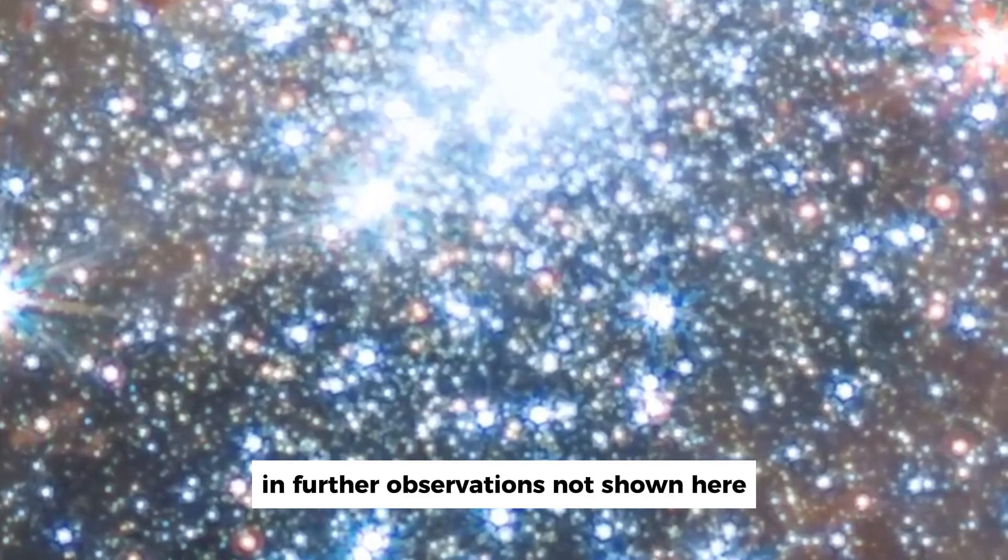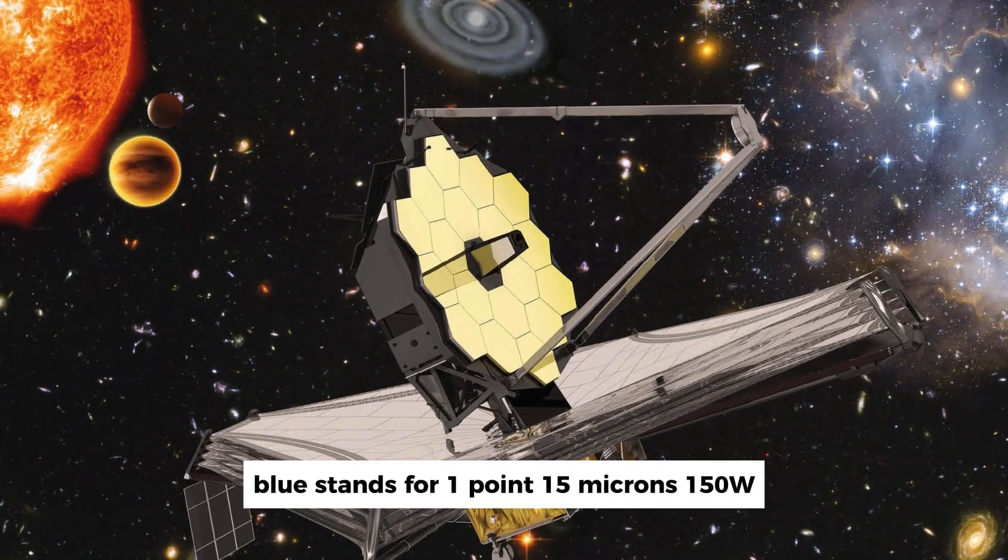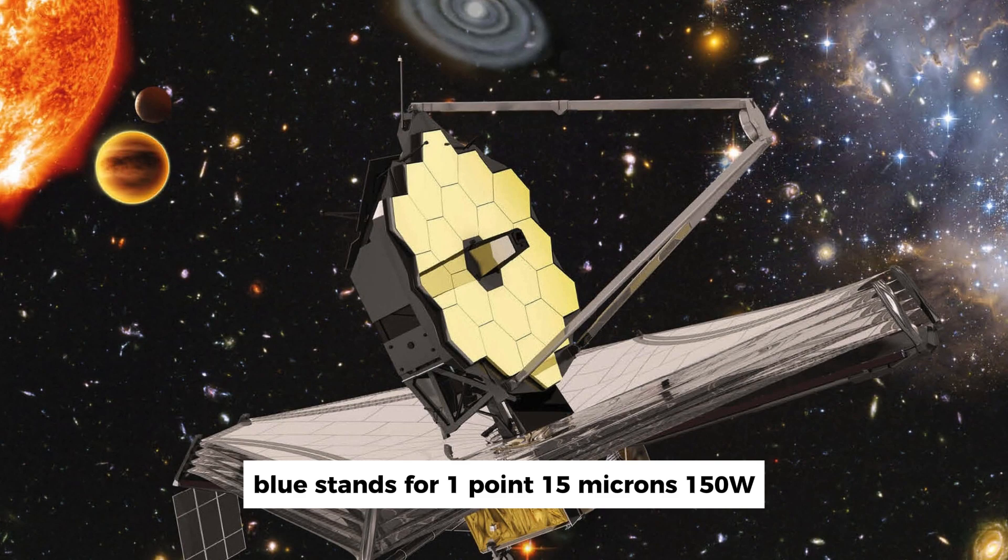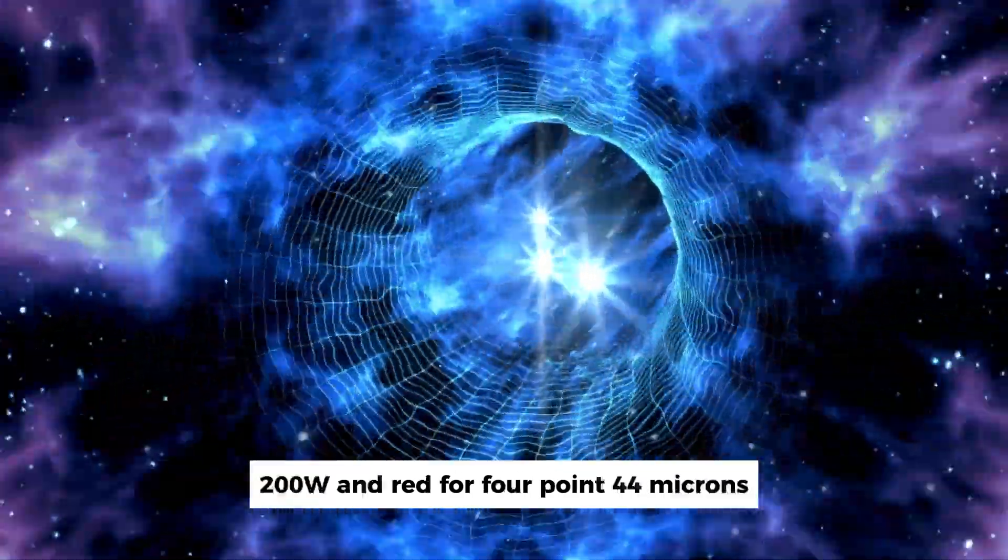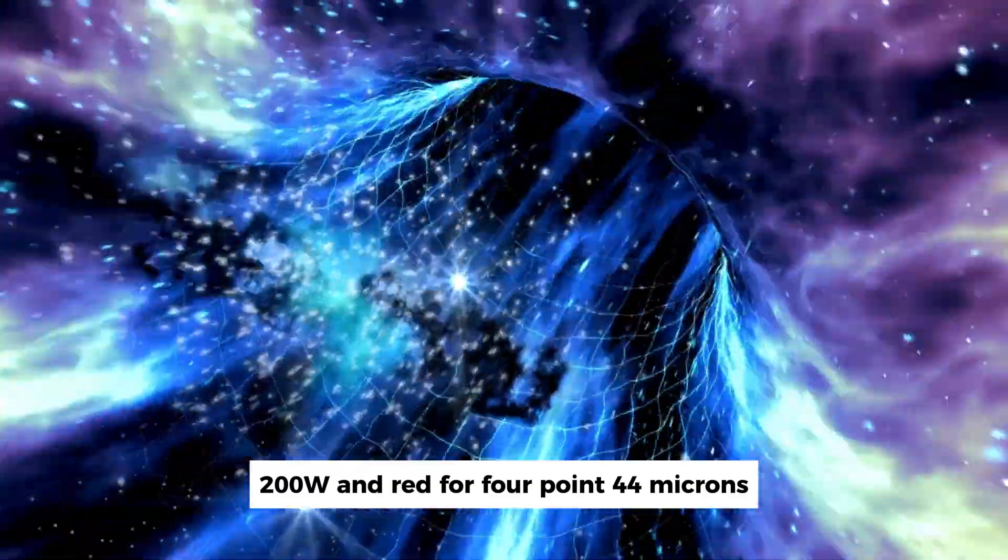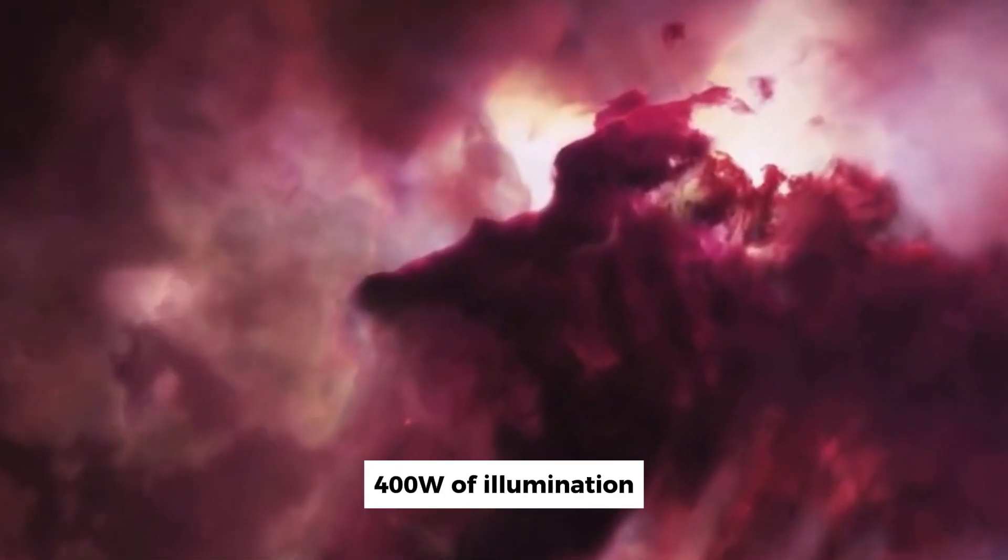In further observations, blue stands for 1.15 microns, 150w, green for 2.0 microns, 200w, and red for 4.44 microns, 400w of illumination.